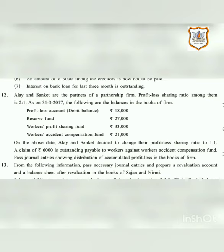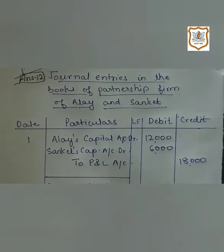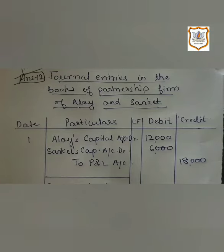At the time of change in the profit sharing ratio, if reserves or accumulated profits and losses exist in the books of the firm, they are transferred to the partners' capital accounts (if capitals are fluctuating) or current accounts (if capitals are fixed) in their old profit sharing ratio. The reason for transfer in the old ratio is that the partners should not be placed at an advantage or disadvantage.